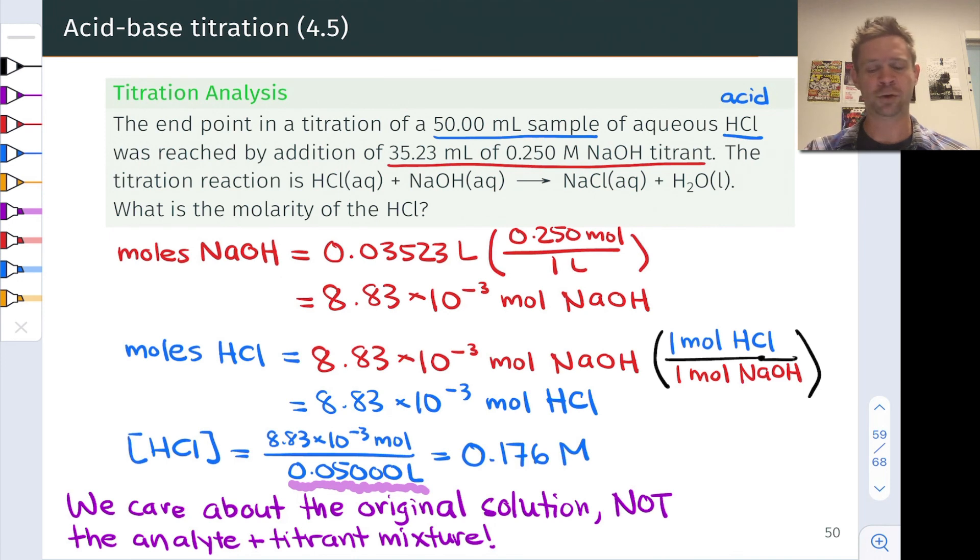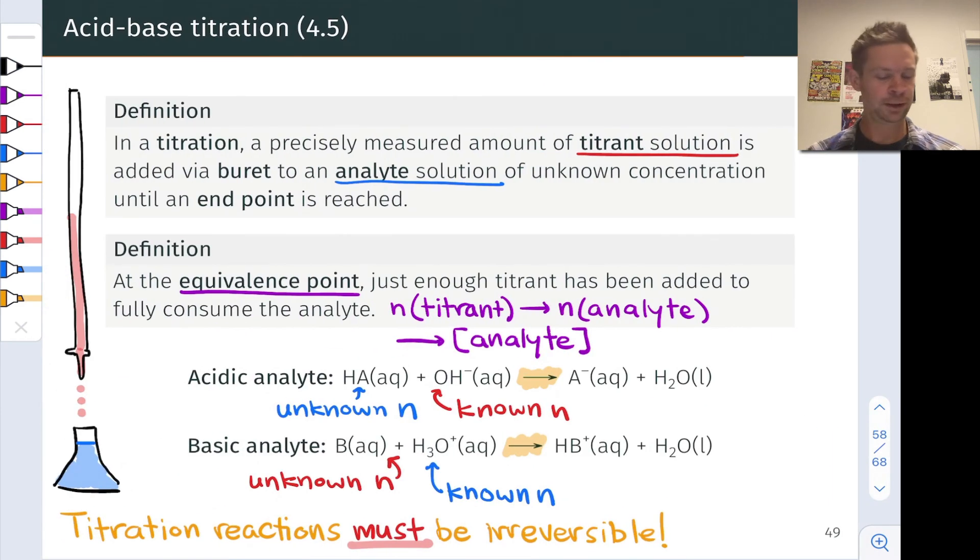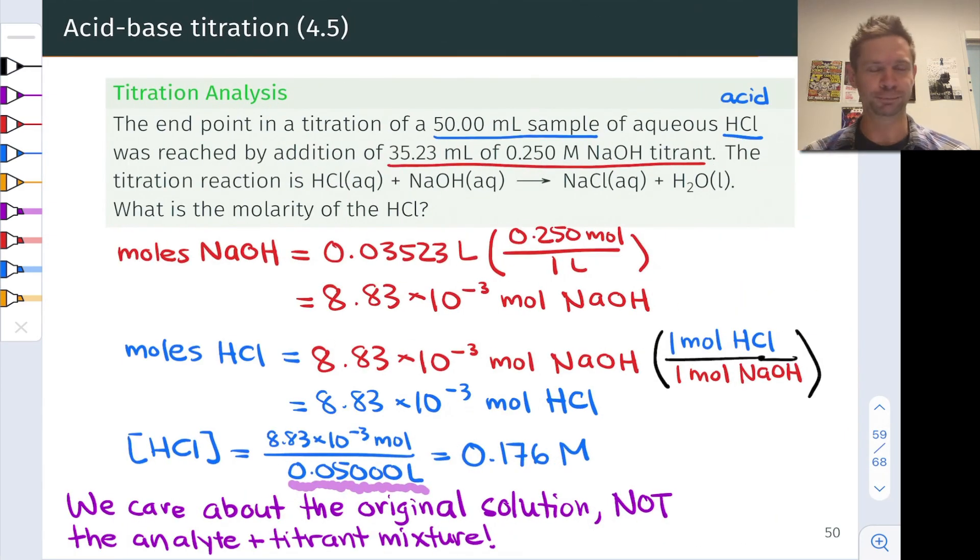It depends on the 0.250 molar concentration of the titrant and would change if we change that concentration of the titrant. What really matters here is the concentration in that original blue solution, if you like it's not really blue but color-coded blue, solution of hydrochloric acid in water.